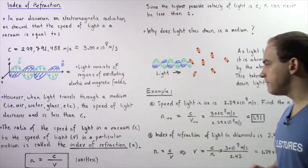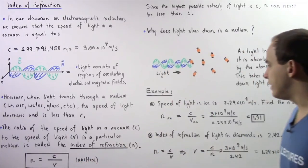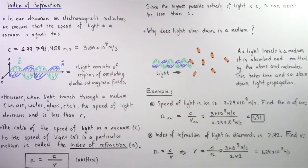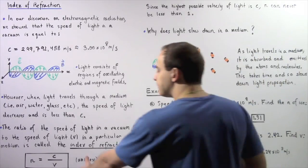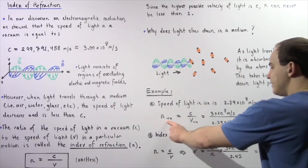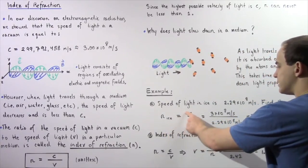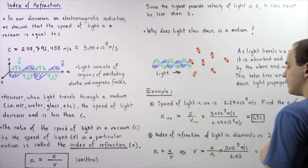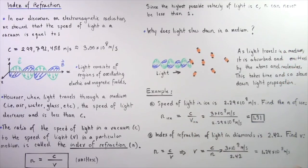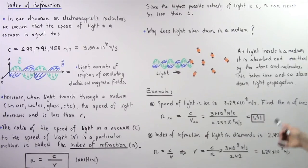Let's look at example A. The speed of light in ice is 2.29 times 10 to the 8 meters per second. We want to find the index of refraction of ice. Applying n equals c divided by v, the index of refraction of ice equals 3.00 times 10 to the 8 divided by 2.29 times 10 to the 8 meters per second, which gives us approximately 1.31.